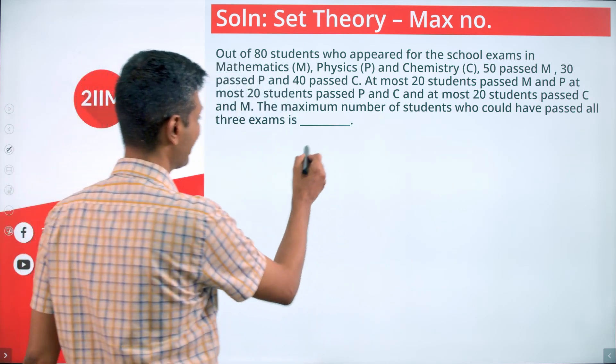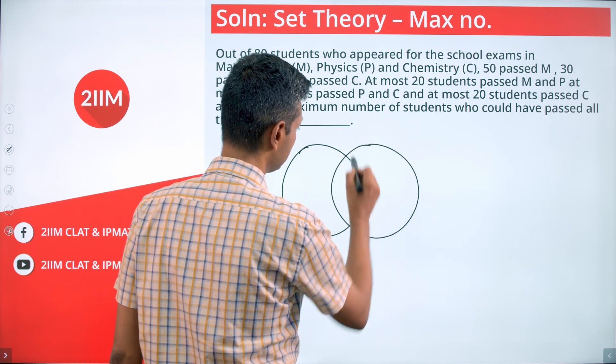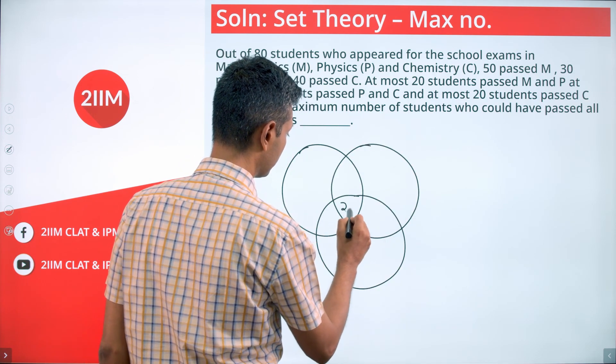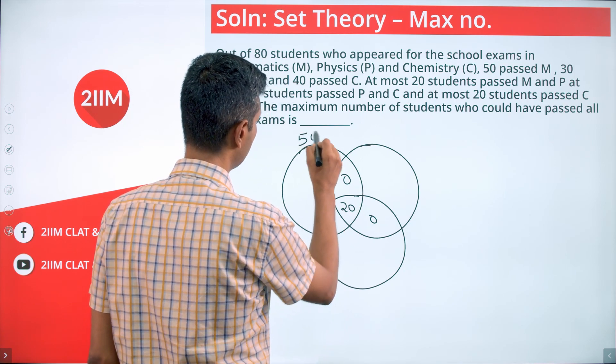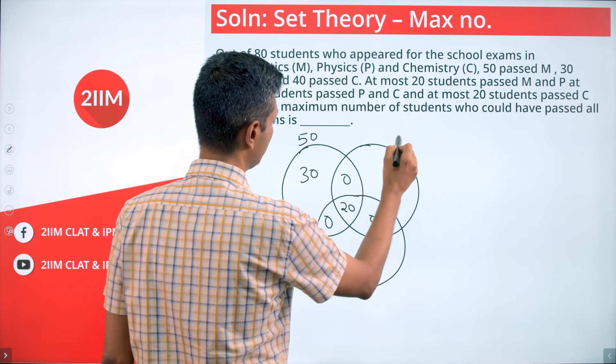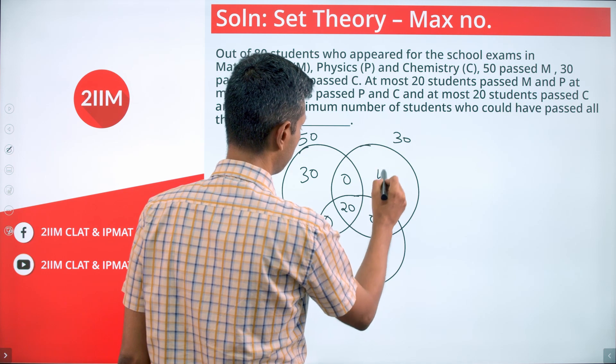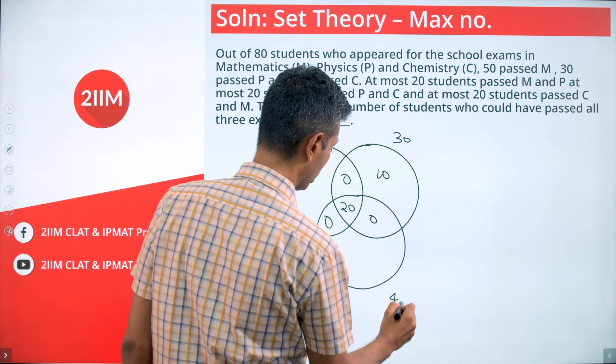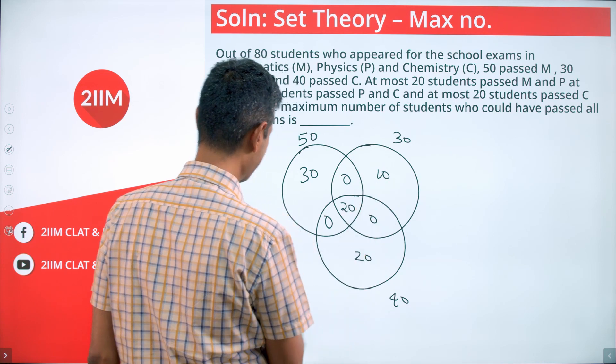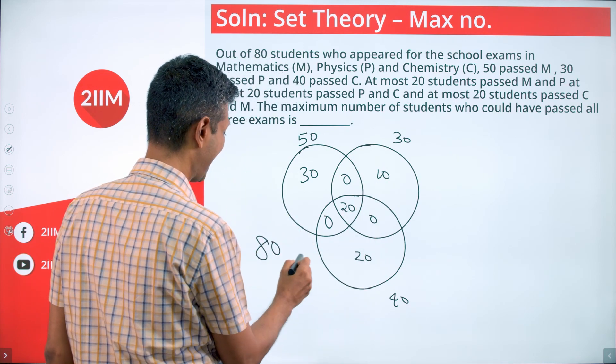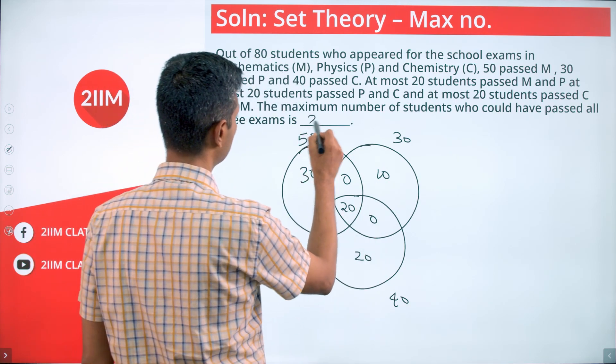Clearly 20 here. I mean, this is zero, zero, zero. Math total is 50, so it'll be 30 people here. Physics total is 30, there should be 10 people here. Chemistry total is 40, there should be 20 here. 30 plus 10, 40, 60, 80. Total is 80. Zero outside. Everything works. The maximum is 20.